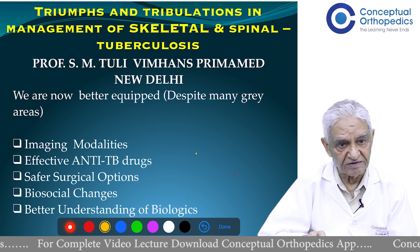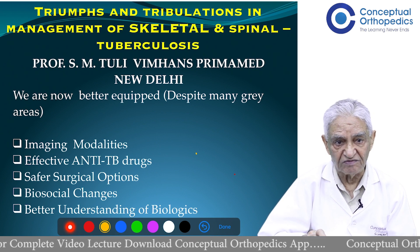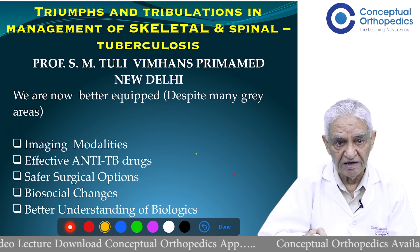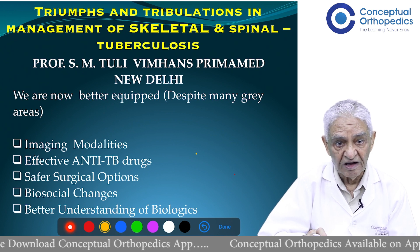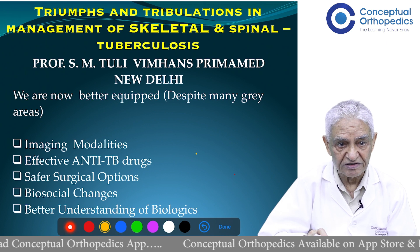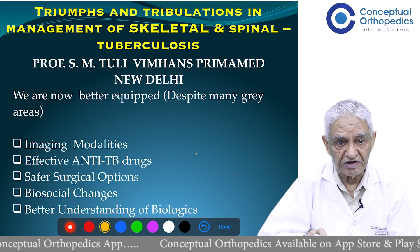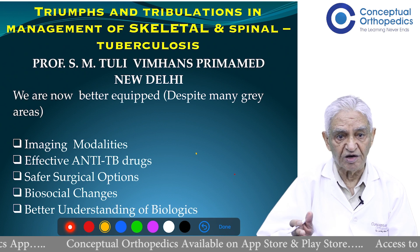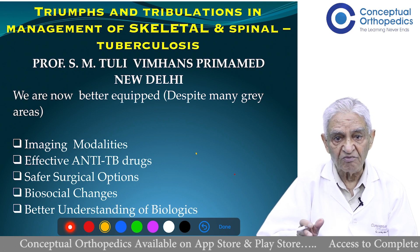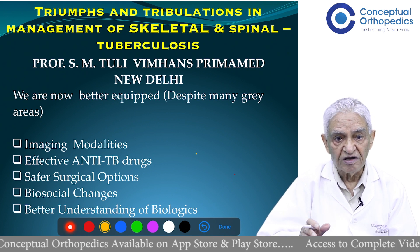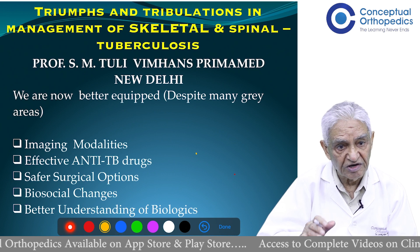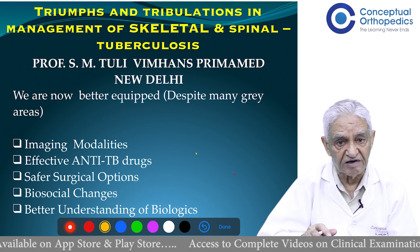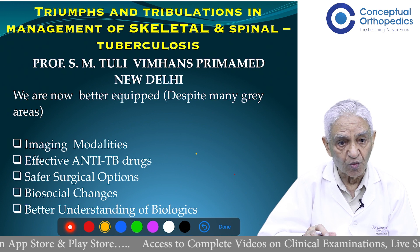Imaging modalities — earlier there were only X-rays available, today we have X-rays, MRI, and isotope bone scans. We have effective anti-TB drugs, safer surgical options, and bio-social changes. Changes are taking place in society; the number of very poor people is decreasing, and that is what will decrease the incidence of tuberculosis in the world.